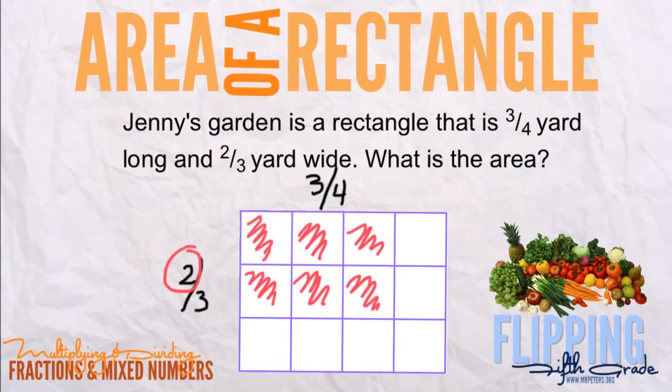So what is the area? It's six-twelfths yard. Now we know that six-twelfths is the same as one-half yard. So what is the area? It's one-half yard squared because we are dealing with area.